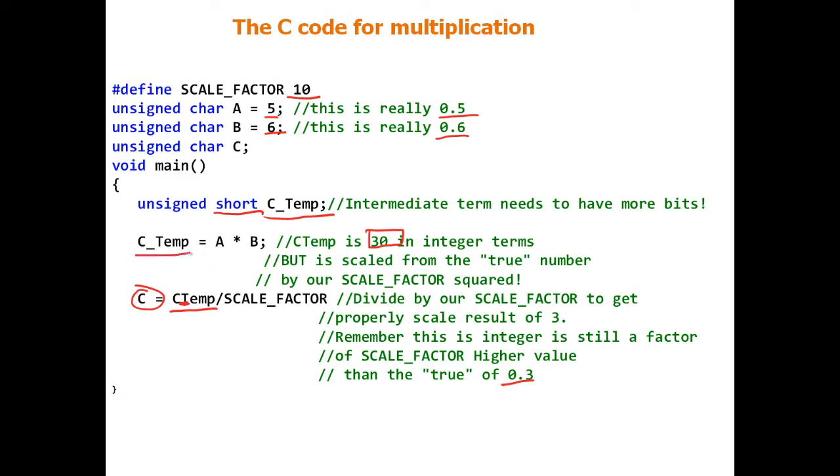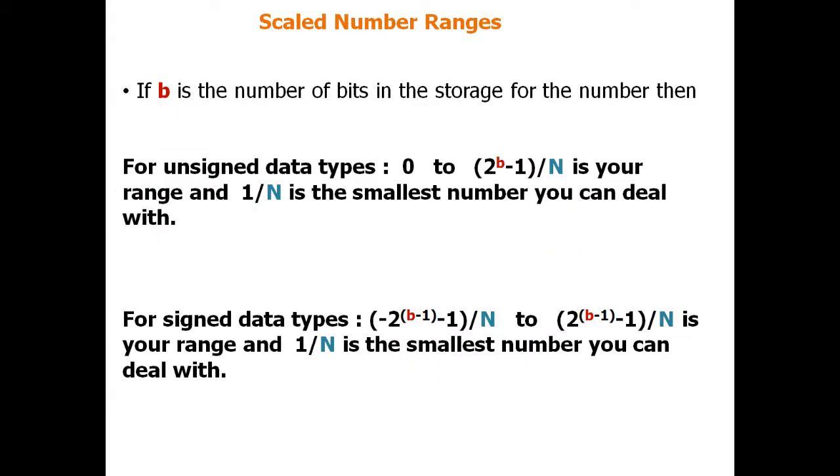Now, Ctemp, we could have left Ctemp in a scaling of 100, of a 10 squared. Now, there are some times you want to do that, and you don't want to. And we'll look at an example later, but you have to understand, every time you do a multiply, you have this artifact. Now, it's not that hard to deal with, but it is there.